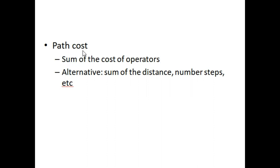Path cost is the sum of the costs of operators — from one state to another state. An alternative way to think of it is the sum of distances or number of steps, then adding up all of those values.